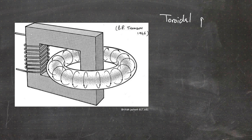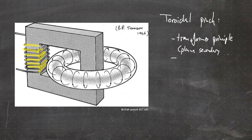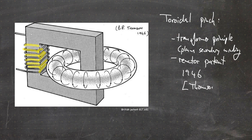A third pinch concept, which was very famous, is the toroidal pinch. As shown on the left-hand side of the slide, it works via the transformer principle. We have the primary winding — the coils visible on the left — and then the plasma acts as the secondary winding, where the current is induced creating a magnetic field. The picture is taken from a reactor patent from the UK.